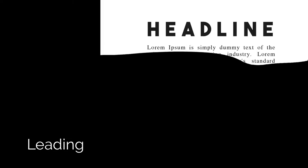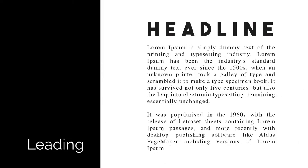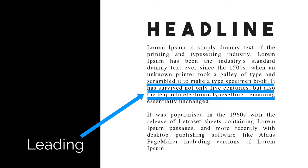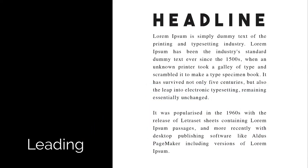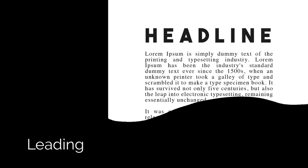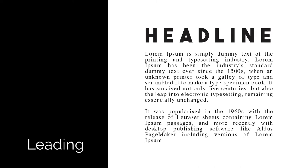The space created between sentences or phrases is called leading. The amount of leading between sentences in a larger paragraph can really change the look and feel of a block of type. A larger leading or spacing allows it to breathe and look very clean, while tighter spacing can feel pretty cramped.